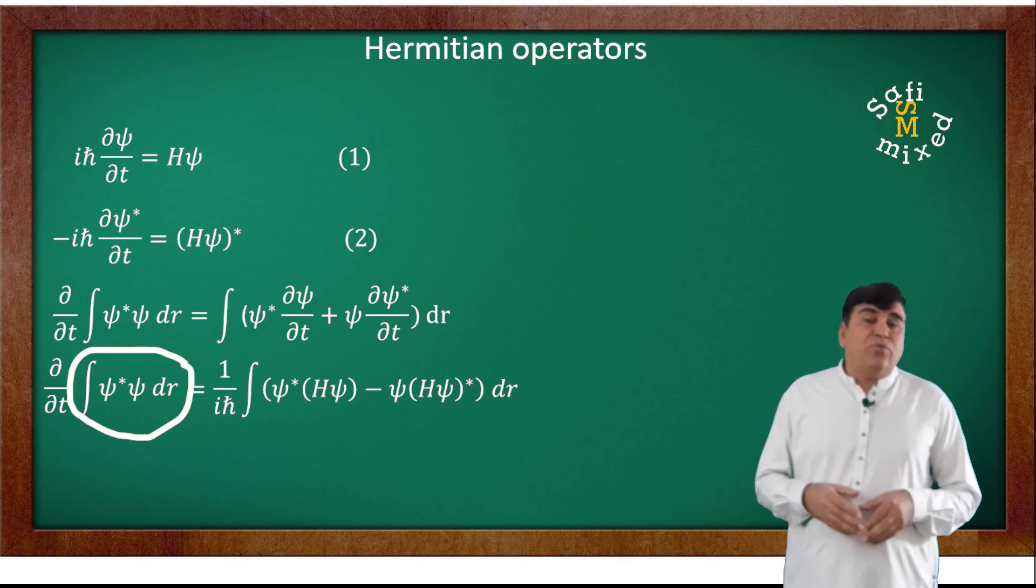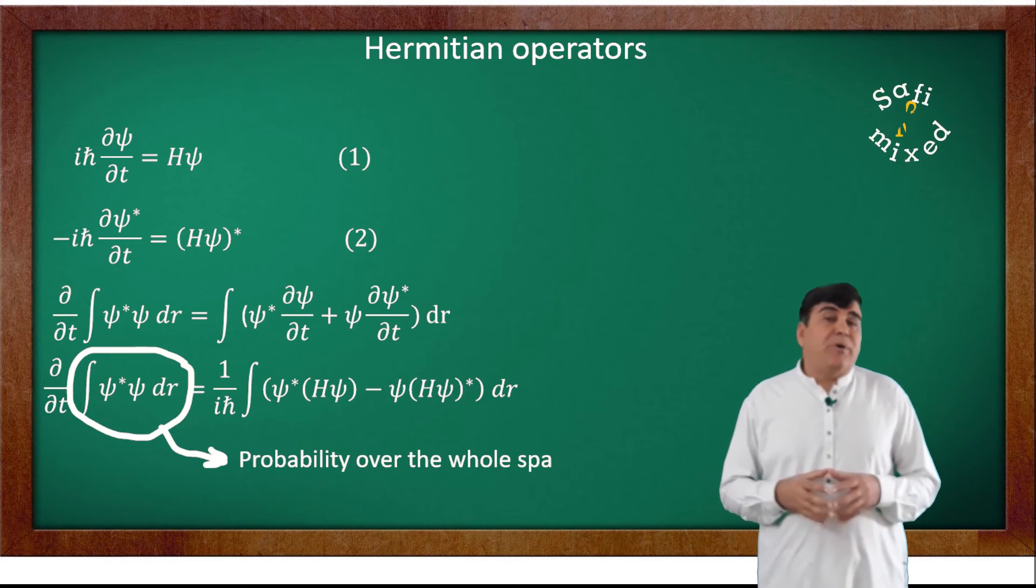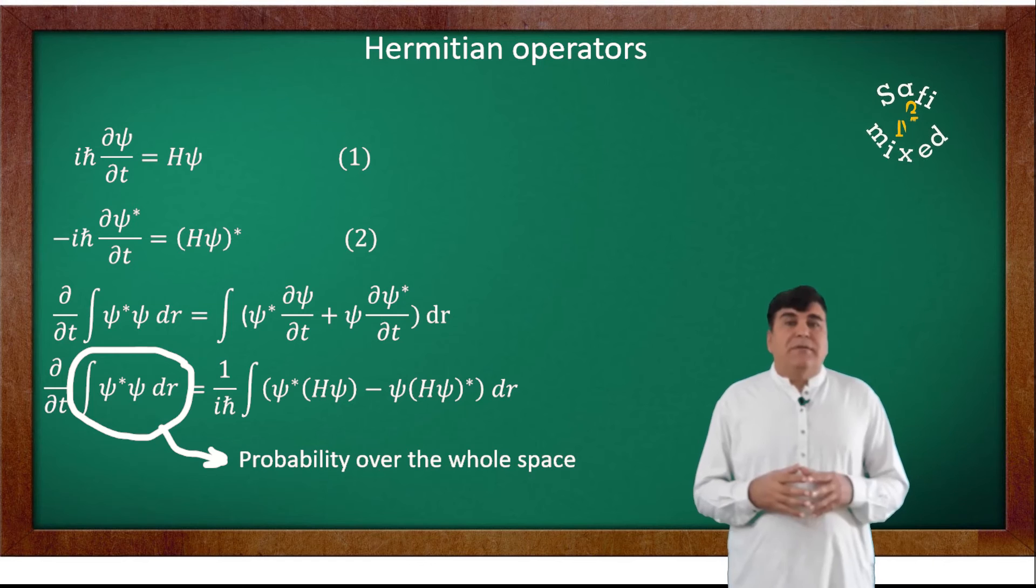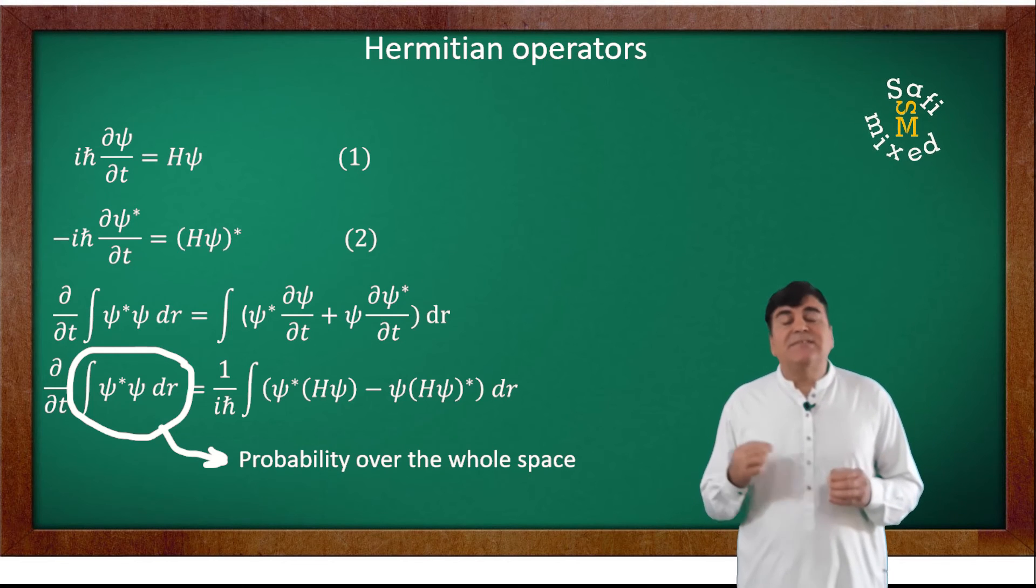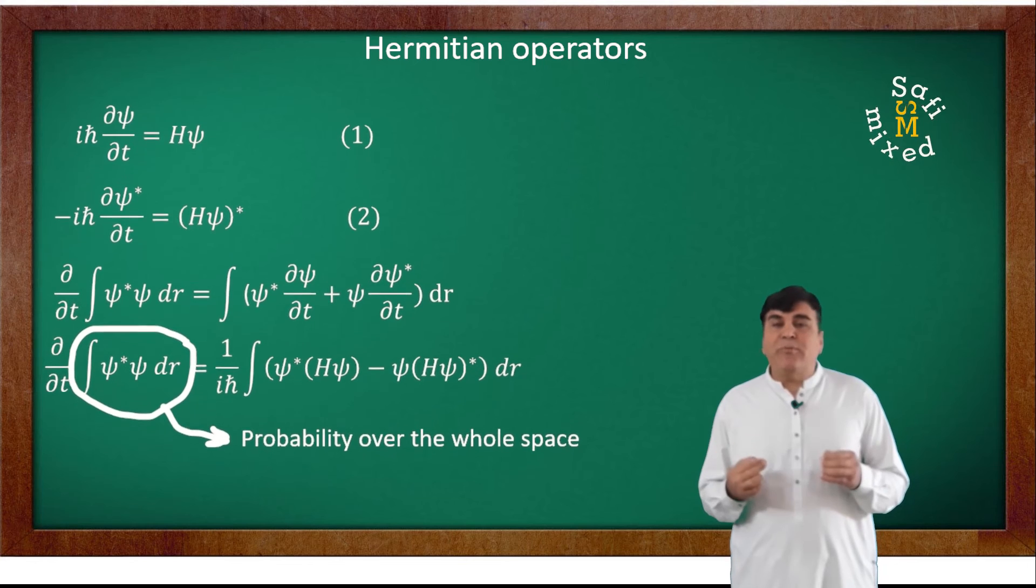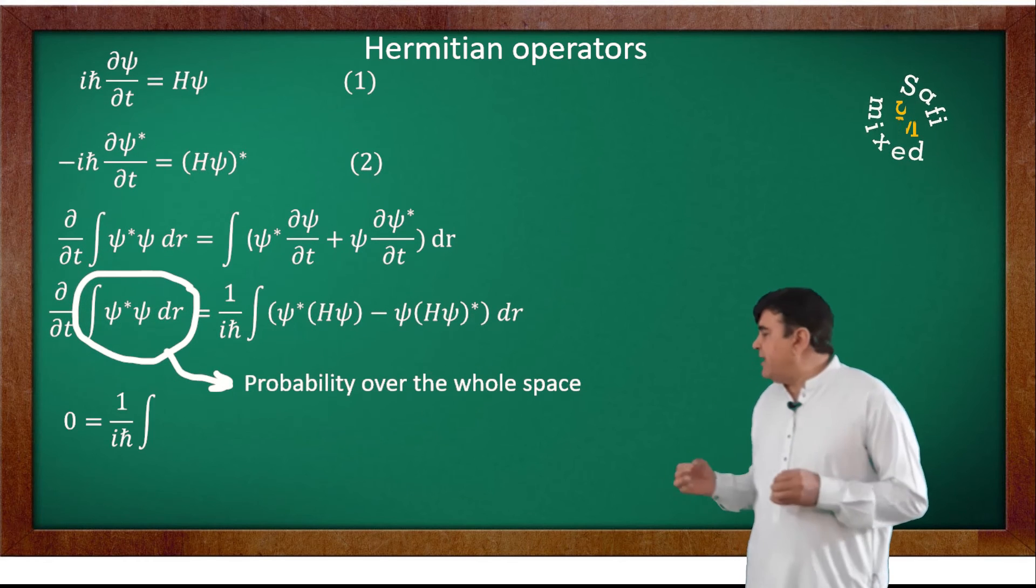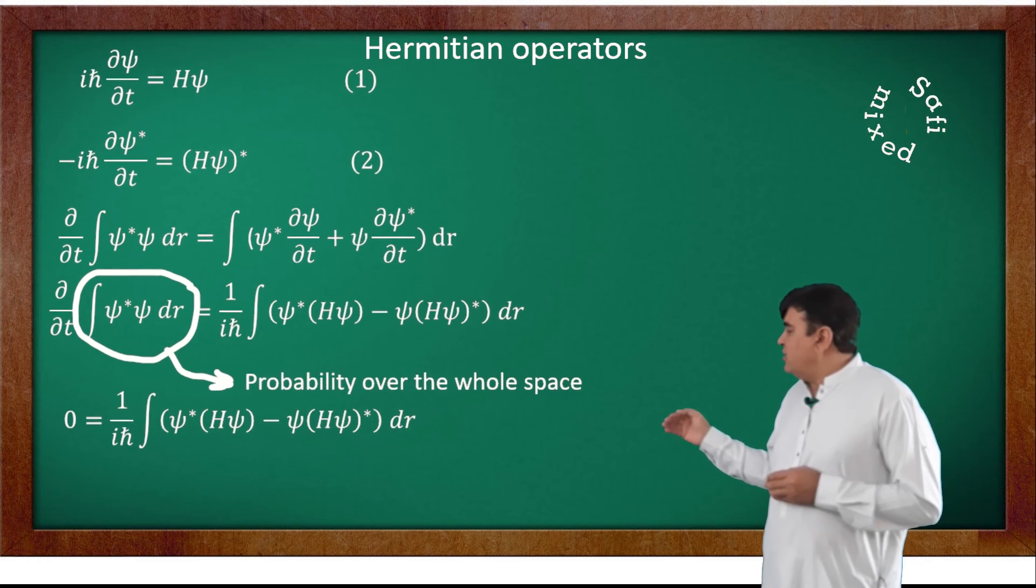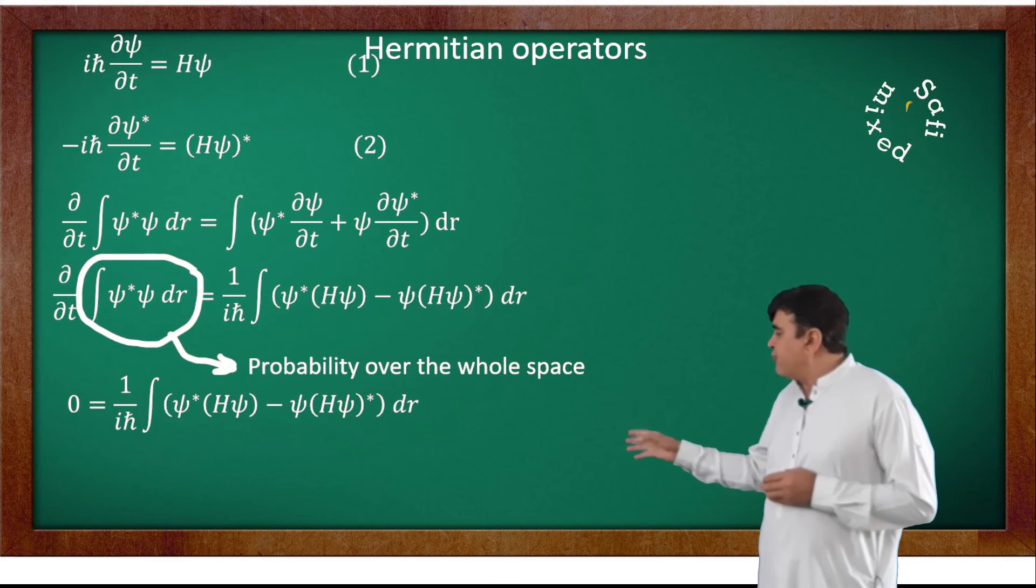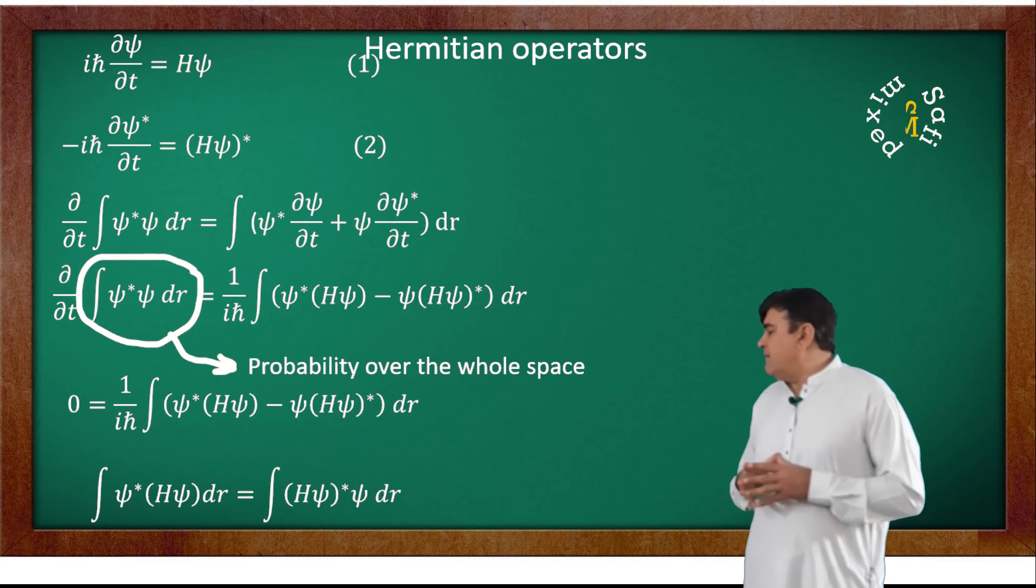The left side of this equation is the probability of finding the particle over the whole space, and according to the normalization of probability, the time derivative of the probability over the whole space equals zero. Therefore, I can set the left side equal to zero and rearrange the equation into this final form.